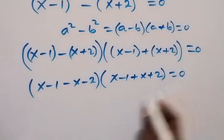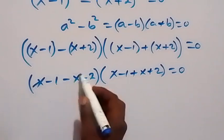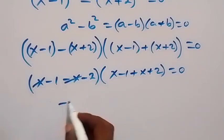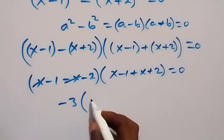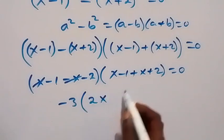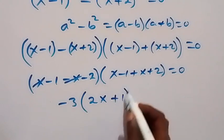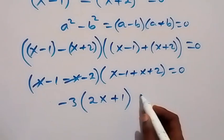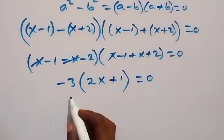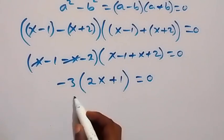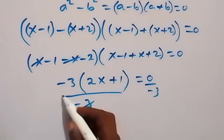Equals 0. From here, x minus x cancel each other, and minus 1 minus 2 is minus 3, then multiply by x plus x, that's 2x. Minus 1 plus 2 plus 1 equals 0. From here we can divide both sides by minus 3, so we have minus 3 on this side, minus 3 on this side. This cancels out.